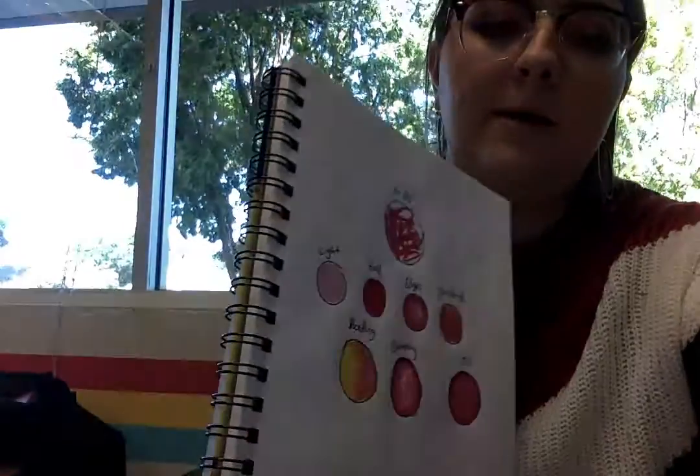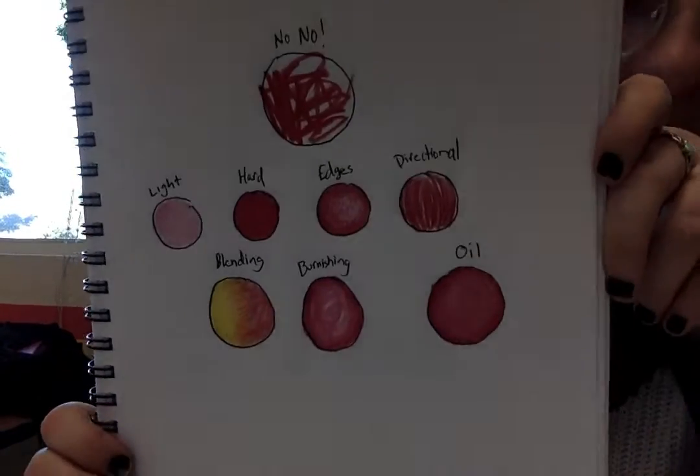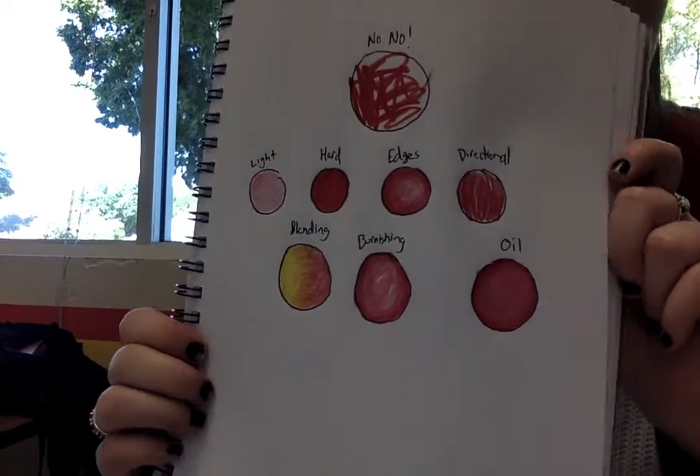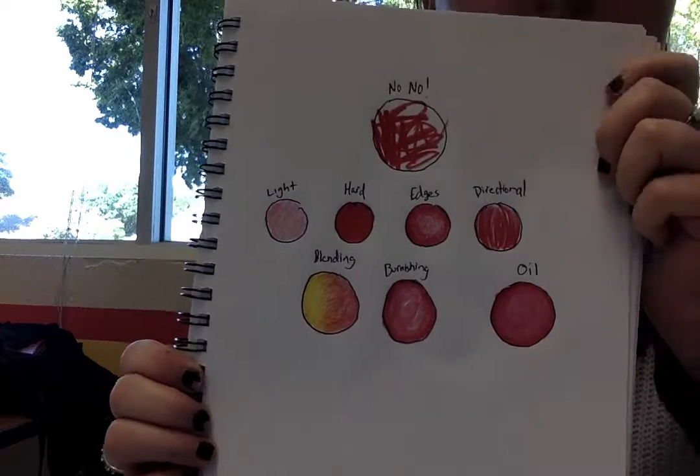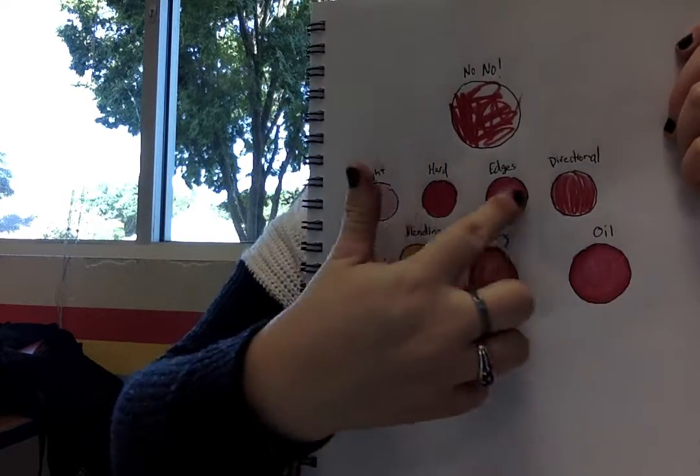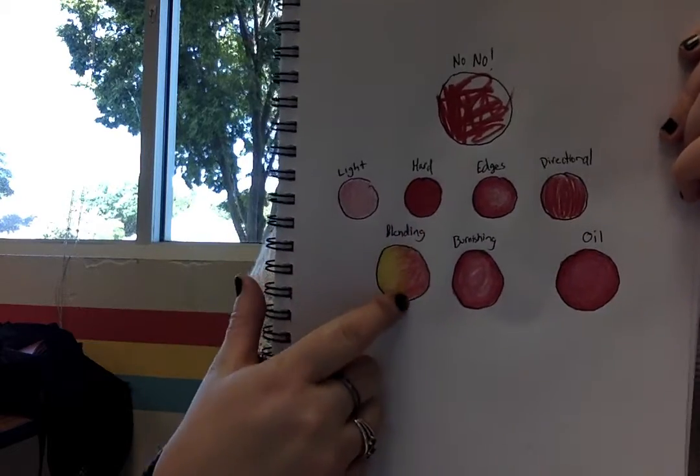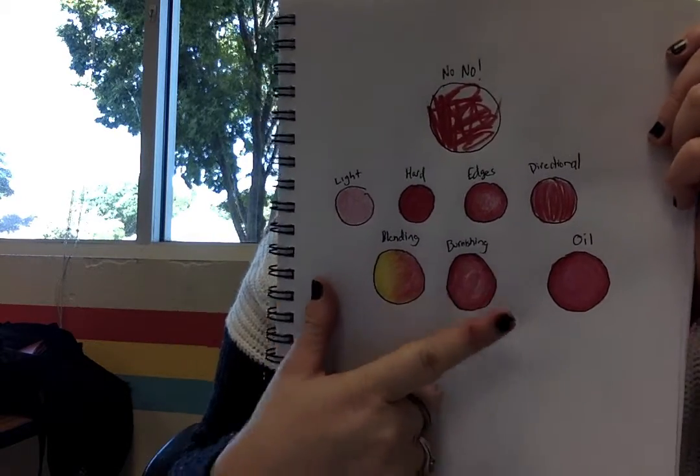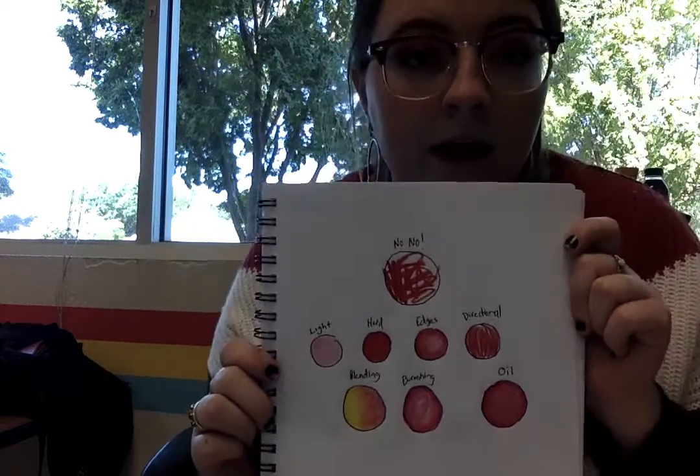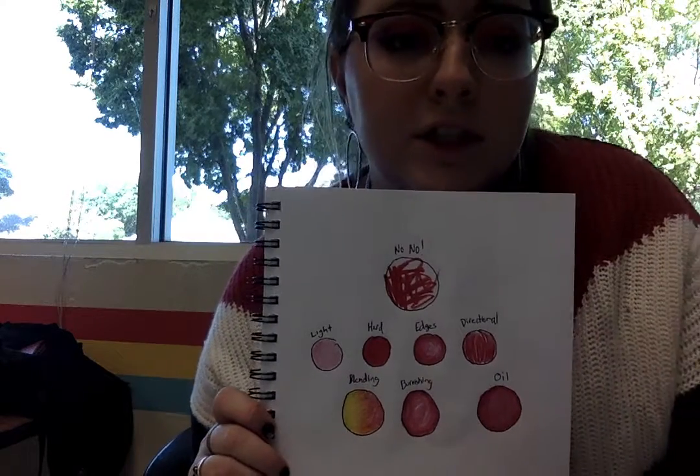These are all our coloring techniques. When you are doing a project in Miss Norton's class I want to see you do these, not the no-no. No more scribble scrabble. You can do light pressure, hard pressure, edges, blending, burnishing, directional, or oil. Can't wait to see your guys's projects, good luck!